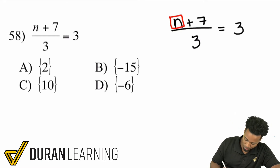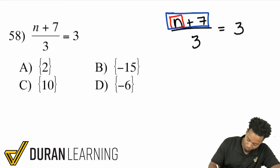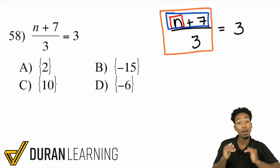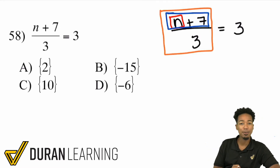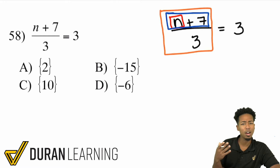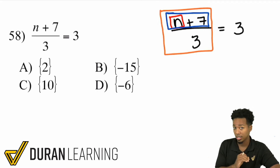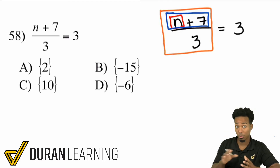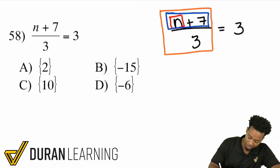A fraction means you're taking your numerator — your top — and dividing it by the bottom. So if I'm looking at this, the entire numerator has to be solved first, then divided by the denominator. This helps us see clearly that our first step needs to be multiplying both sides by 3, because the last step working forward is dividing everything by 3. So working backwards, we multiply everything by 3.